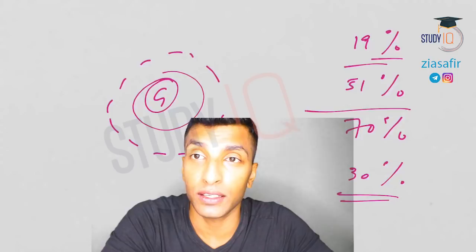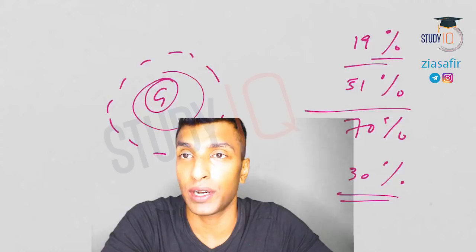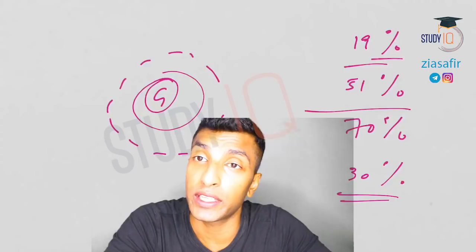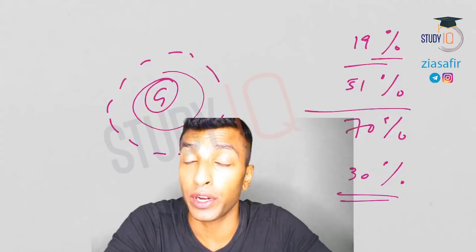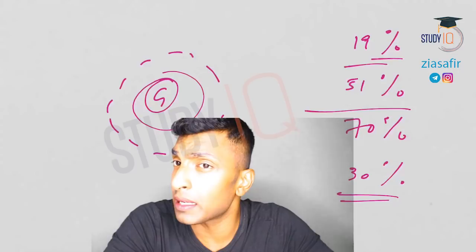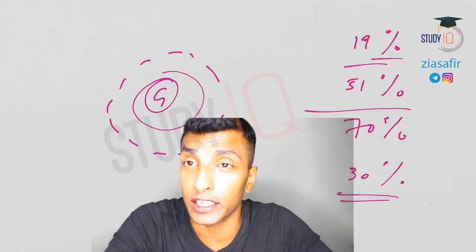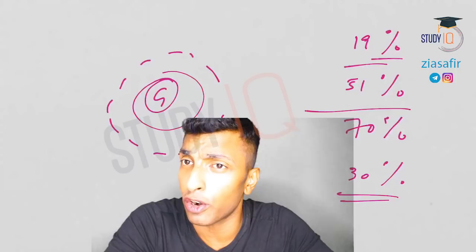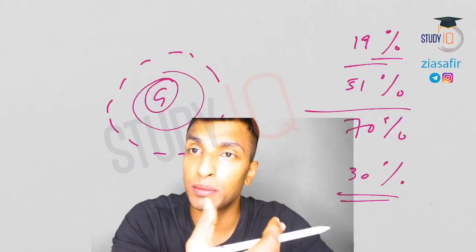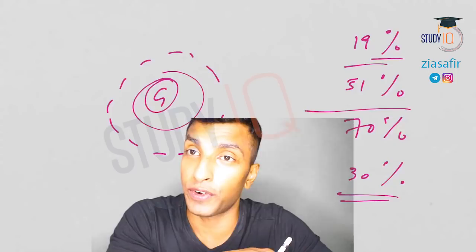The Charter Act of 1813 had two important provisions: end of the East India Company's trade monopoly except in two items — trade in tea products and trade with China. This led to de-industrialization in India. The second provision directed the company to spend rupees one lakh for the betterment of education in areas under their control — the first step towards improvement of education in India, followed later by milestones like Macaulay's Minute in 1835, replacement of Persian with English in 1837, Wood's Despatch in 1854, and the Hunter Commission in 1882.